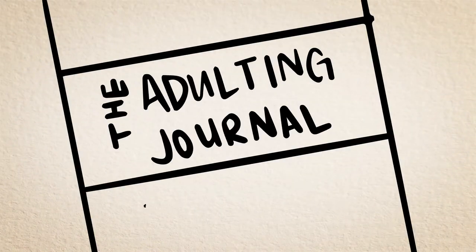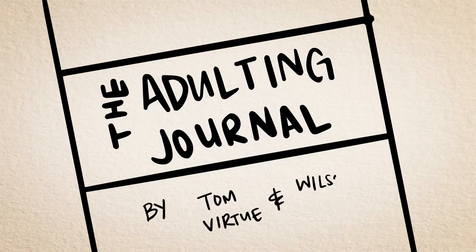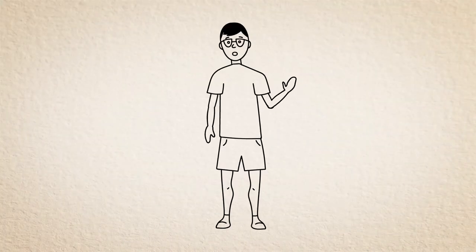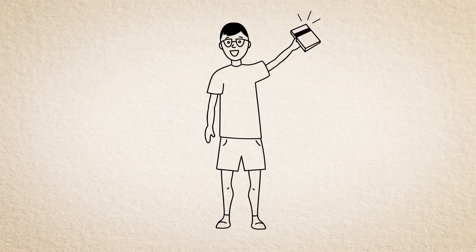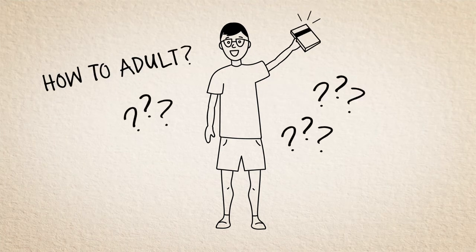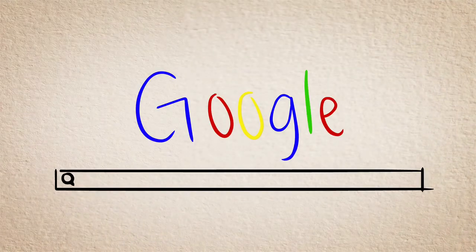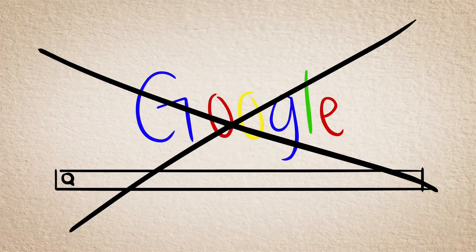The adulting journal was birthed out of Tom's mentoring relationship with Wilson. They wanted to bring you a journal that would mirror their relationship and help you look inward to process your biggest questions during adulting. The questions that Google can't answer for you.